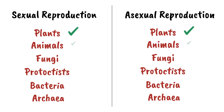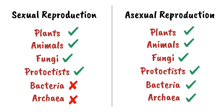Amongst plants, animals, fungi, and protoctists, you will find examples of species that can reproduce either sexually or asexually, and many that can do both. All species of bacteria and archaea, however, can only reproduce asexually.